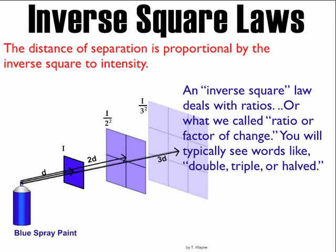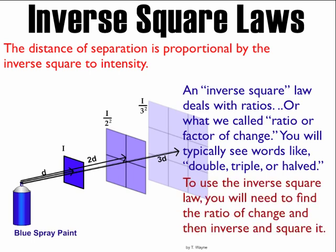It's pretty simple. It deals with ratios, not numbers. I'm looking for the factor of change. I typically look for words like double, triple, or halved, or something that says a factor of change of, say, three-halves. Then the inverse square law is a set of instructions I follow to figure out how the intensity varies.